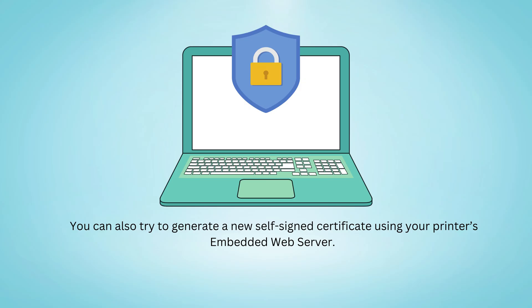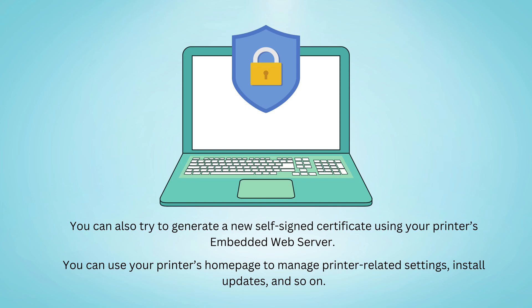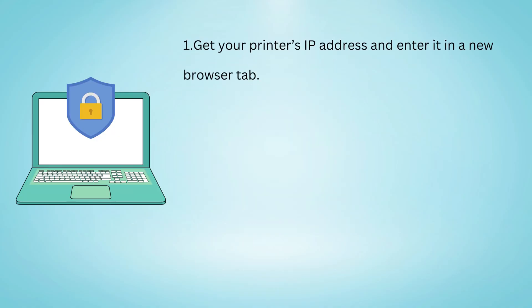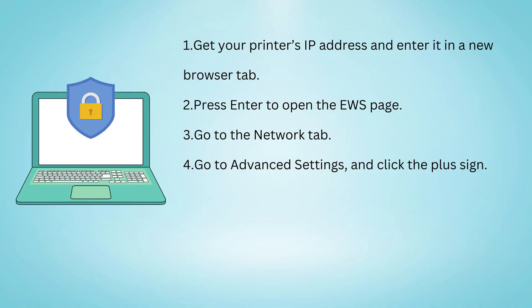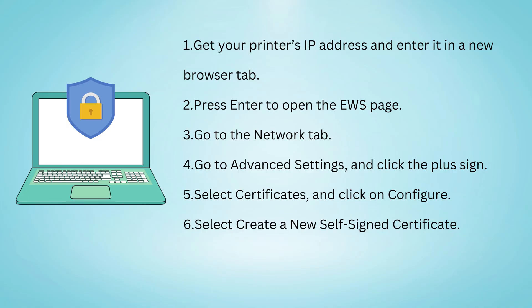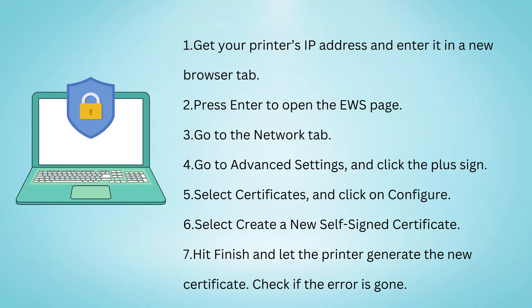You can also try to generate a new self-signed certificate using your printer's embedded web server. Get your printer's IP address and enter it in a new browser tab, then press Enter to open the EWS page. Go to the Network tab, then go to Advanced Settings and click the plus sign. Select Certificates and click on Configure, then select Create a new self-signed certificate. Hit Finish and let the printer generate the new certificate.